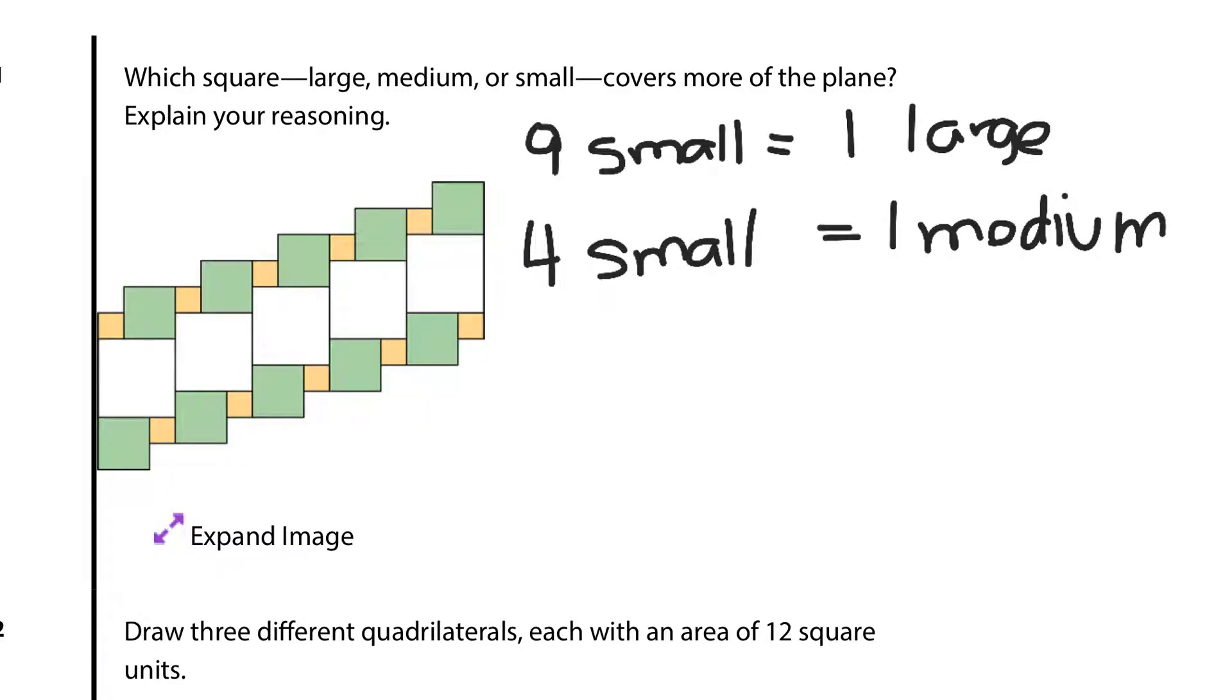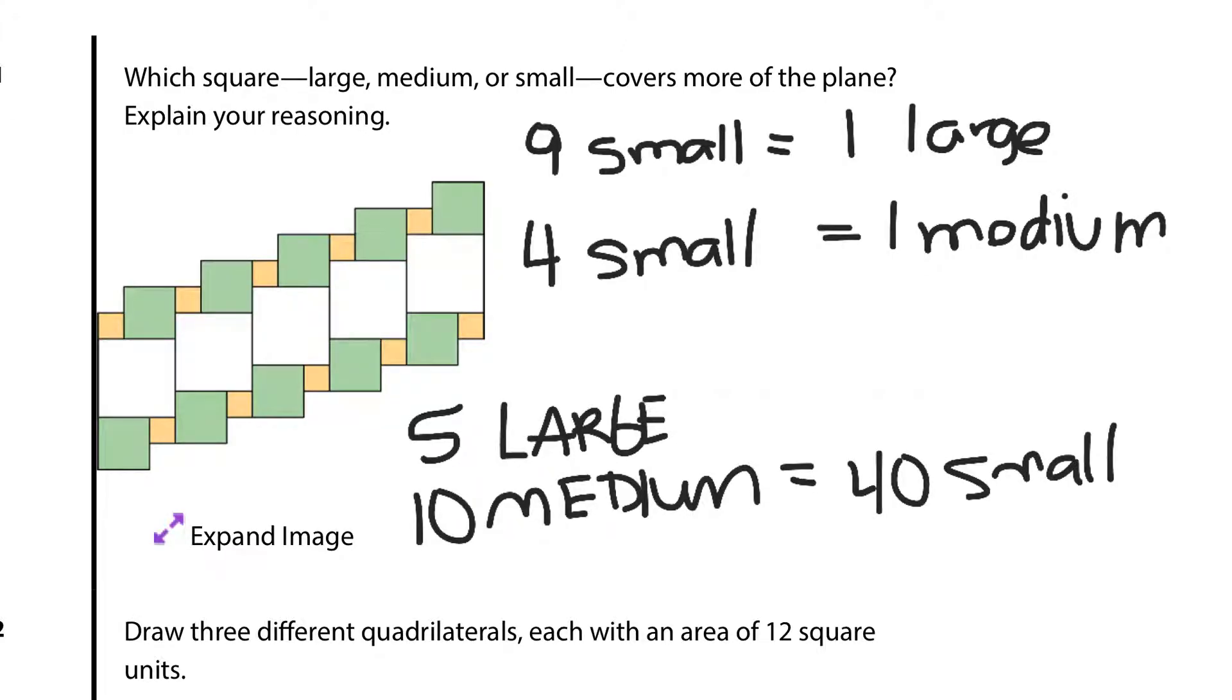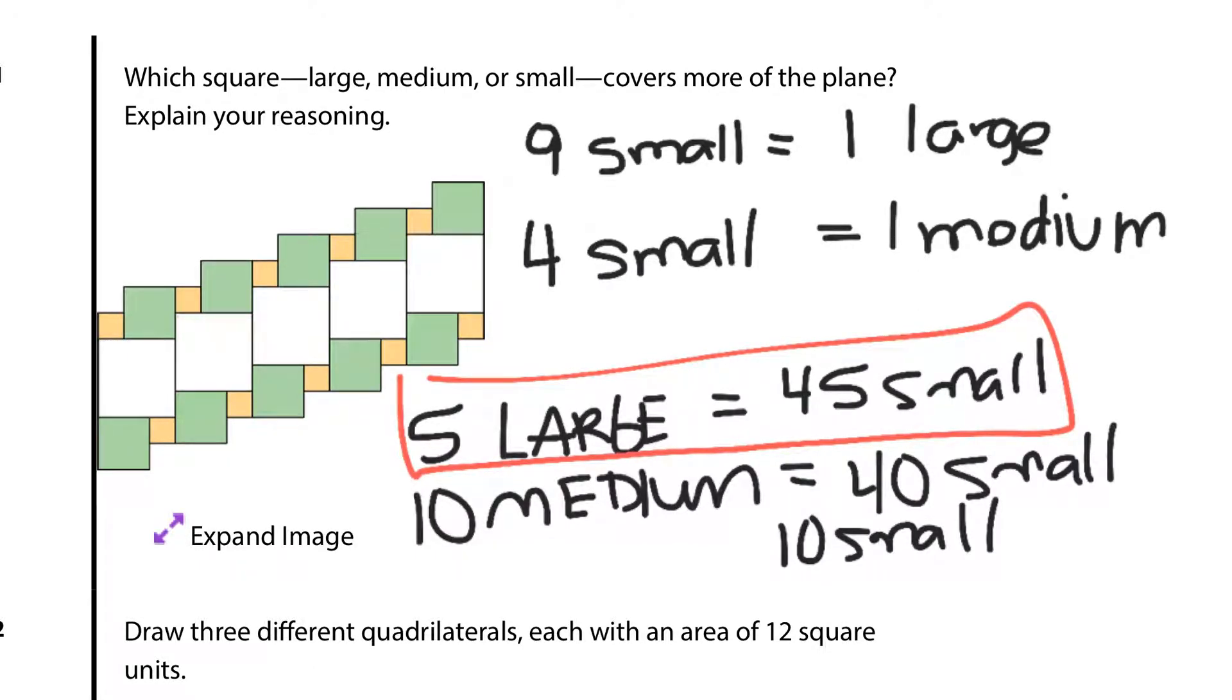And so then we can break down what's going on here. How many large squares are there? 5. Now, there are 10 medium squares, which if we multiply by 4, equals 40 small squares. If we go back up to our large and multiply by 9, we get 45 small squares. Because 5 large squares is equivalent to 45 small squares. Then how many small squares are there? Well, just 10. And so which covers more of the plane? That's going to be the 5 large squares, because again, they're equivalent to 45 small squares.